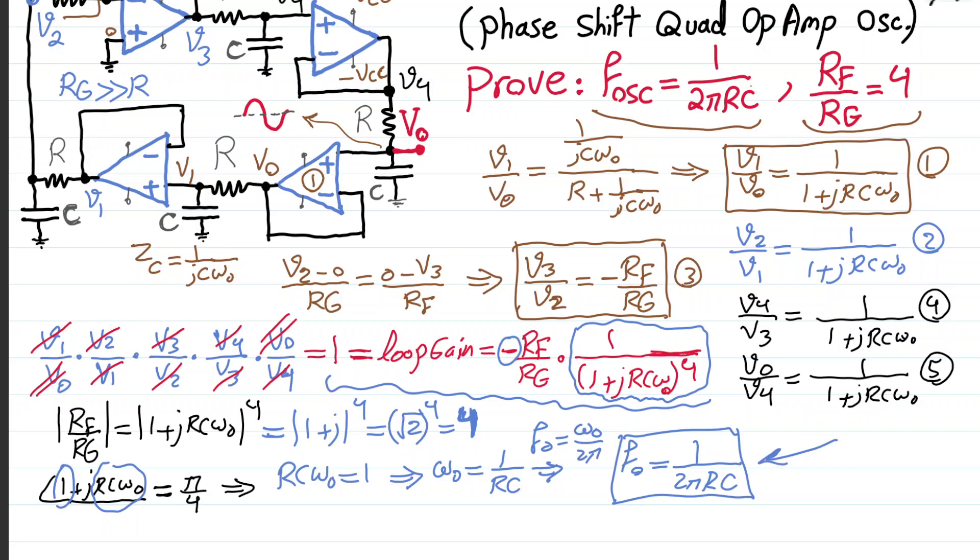In real life, there are non-idealities and impracticalities. So, because of those things, the gain actually might be required to be slightly more than 4 because of losses that are not foreseen. But there are mismatches and stuff like that that in real implementation need to be considered.